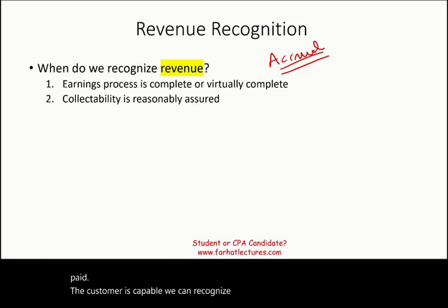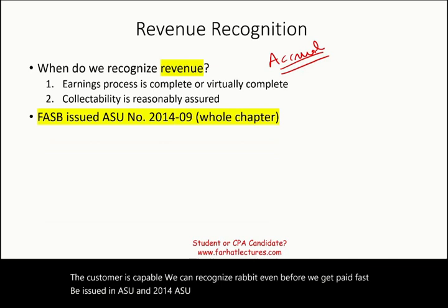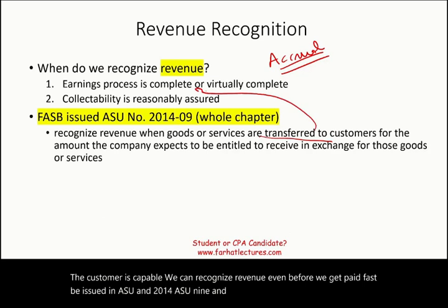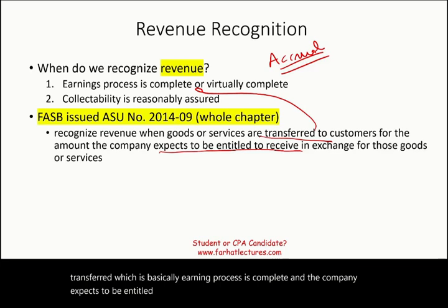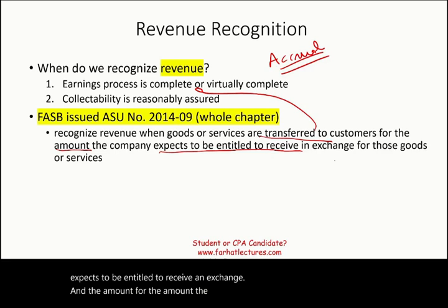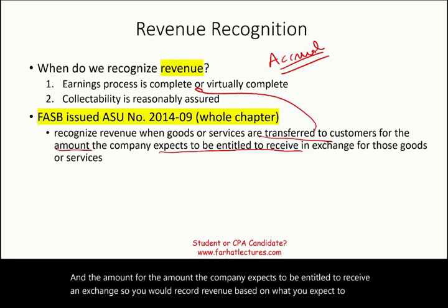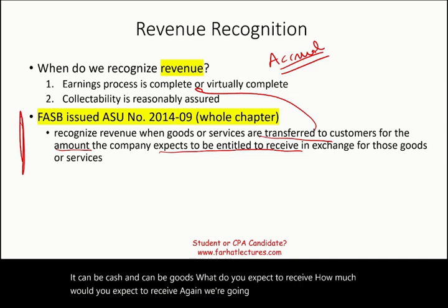FASB issued ASU 2014-09, and we'll have a whole chapter about this. Basically it says: recognize revenue when goods and services are transferred — which is essentially when the earning process is complete — and the company expects to be entitled to receive an amount in exchange. You record revenue based on what you expect to receive, whether cash or goods. We'll cover revenue recognition in depth in a dedicated chapter.